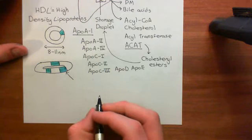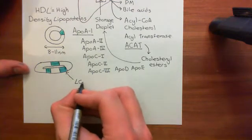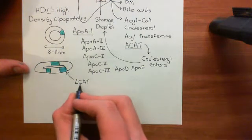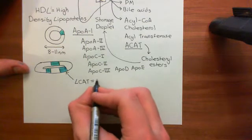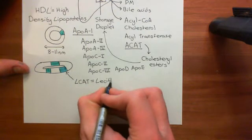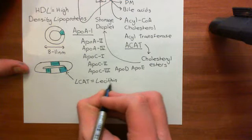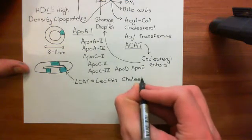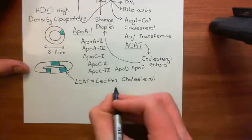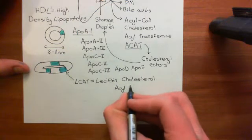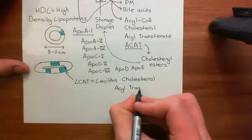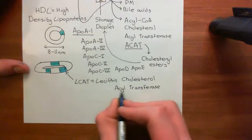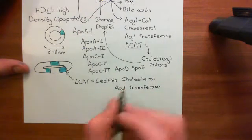This special enzyme is called LCAT, which stands for lecithin cholesterol acyltransferase. The L is for lecithin — remember, lecithin is another name for phosphatidylcholine. The C is for cholesterol, the A is for acyl, and the T is for transferase. This enzyme is basically going to transfer an acyl group from lecithin to cholesterol.